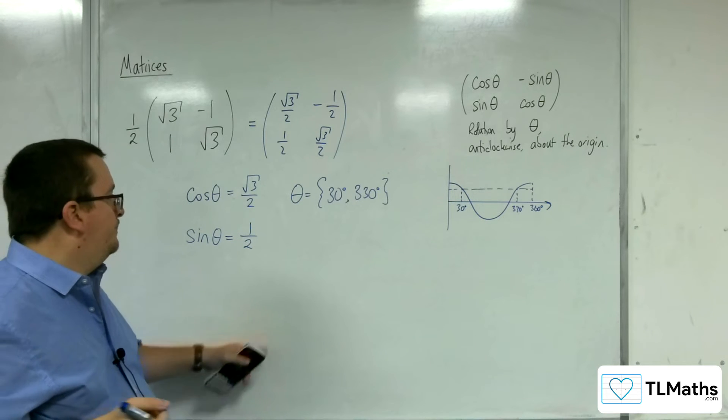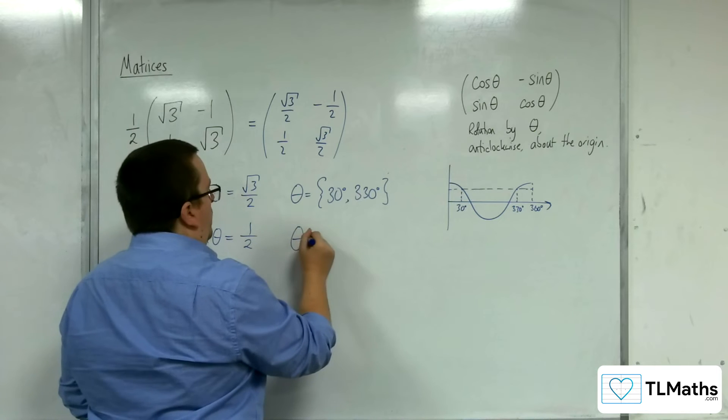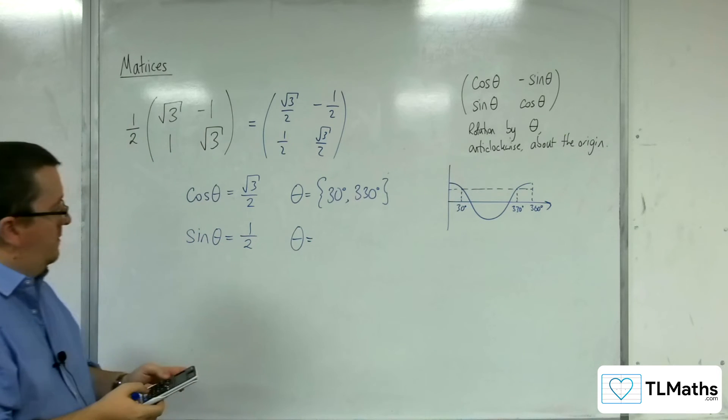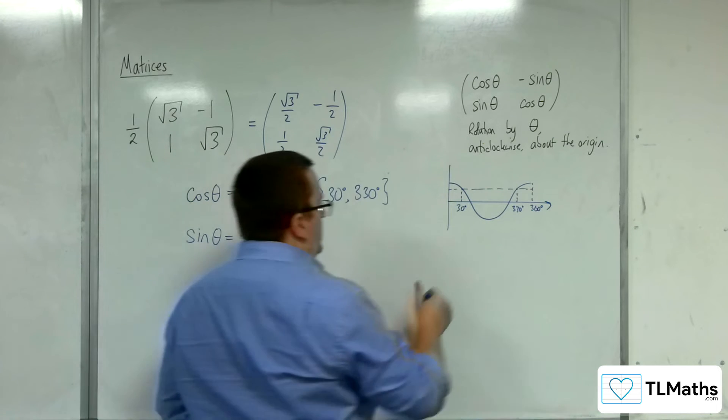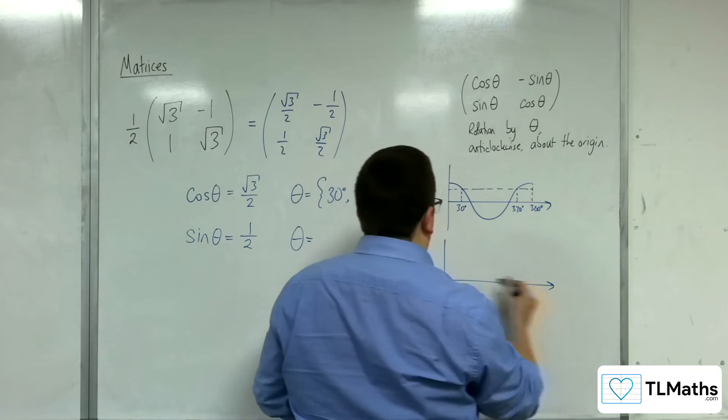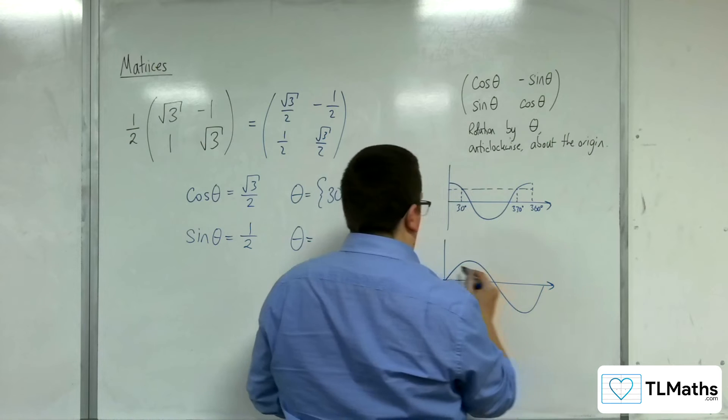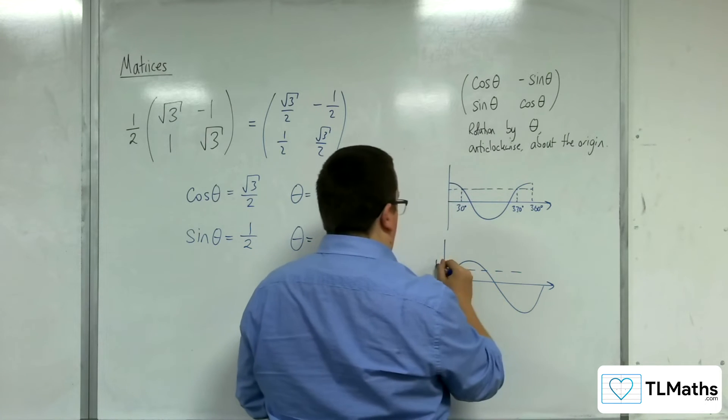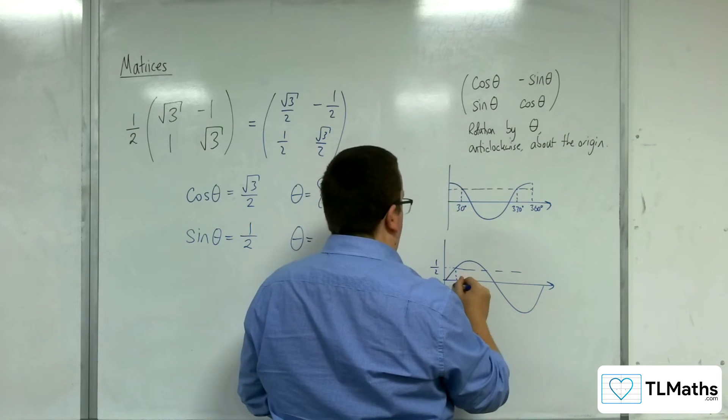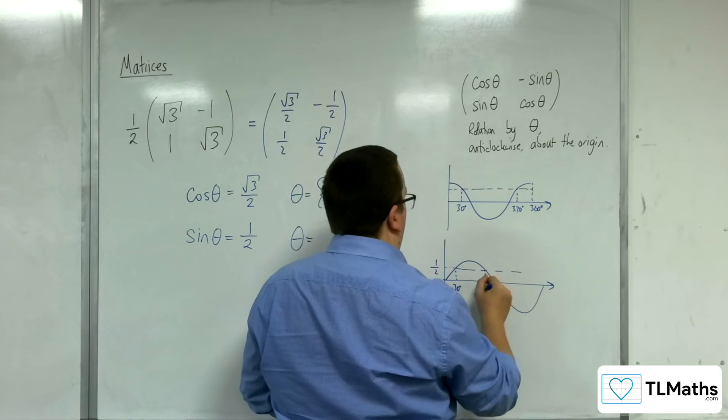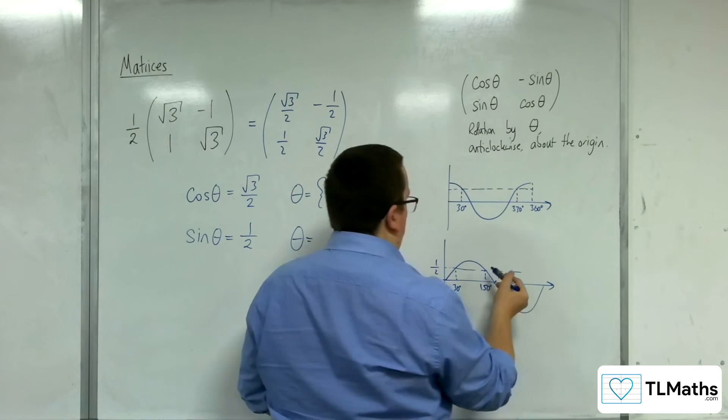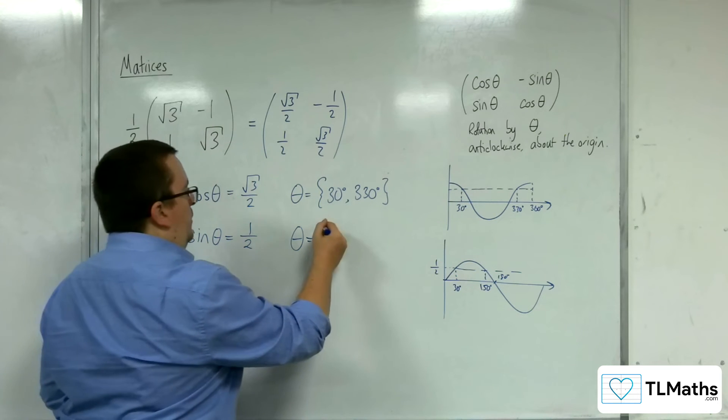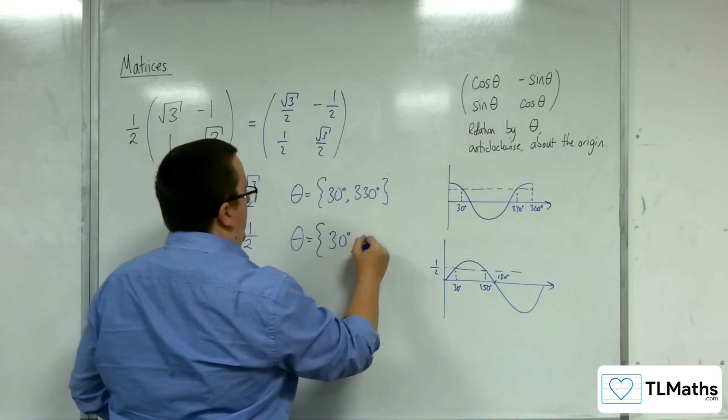So when I do inverse sine of a half, I get the 30 degrees. So there's the half, there's the 30, and that's 180, so this would have to be 150, 30 degrees down. So we've got 30 and 150.